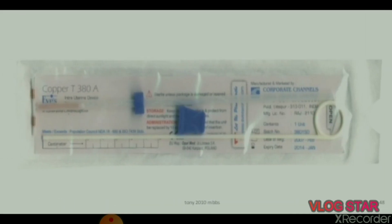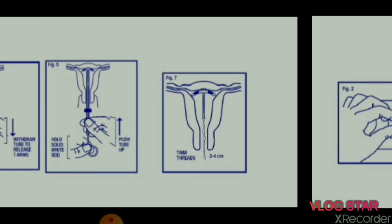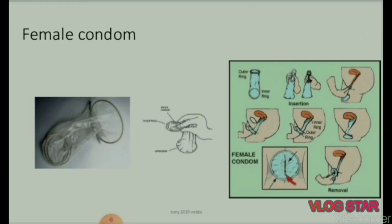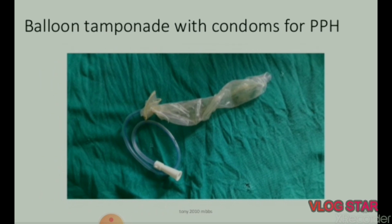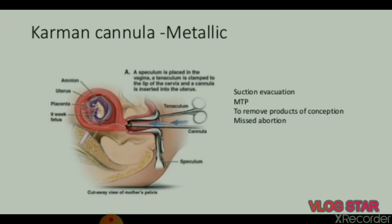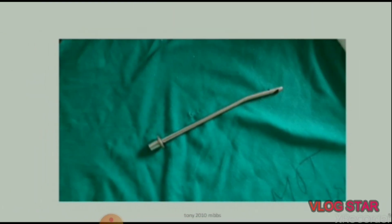Some instruments for family planning: copper T. Next is Karman cannula — plastic, available in different sizes. The approximate size required for a particular case equals the weeks of pregnancy to be terminated. The plastic cannula has advantages over a metallic one: it causes less damage to the uterine wall, and the products sucked out can be visible. The vacuum must be broken before withdrawal.